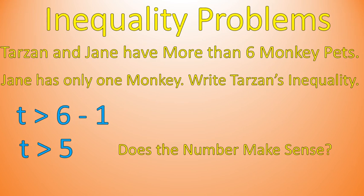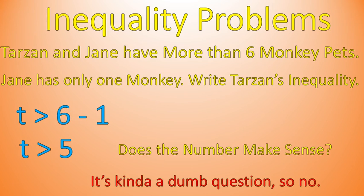Again, at the end of these questions we ask: does the number make sense? Tarzan has more than five monkeys, Jane has one — yeah, I guess it makes sense. It's kind of a silly question, but at least the numbers make sense, and that's what we're focusing on.